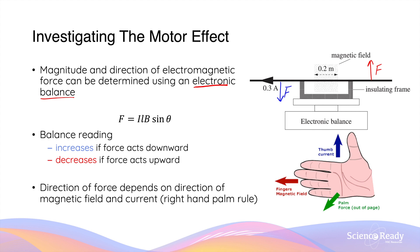If the force provided by the magnetic field is going upwards, the mass reading as displayed by the balance will decrease instead. The direction of the magnetic force depends on the relative directions of the current flowing through the conductor as well as the direction of the magnetic field. Specifically, the direction of the force can be determined by using the right-hand palm rule, where the thumb points in the direction of the conventional current, the four fingers are in the direction of the magnetic field, and the palm will be facing the direction of the magnetic force.